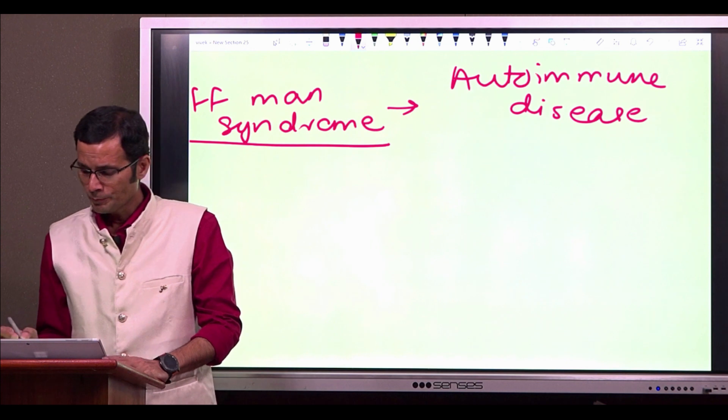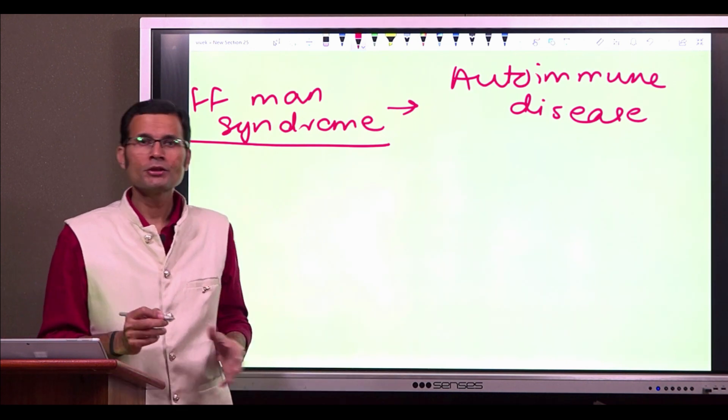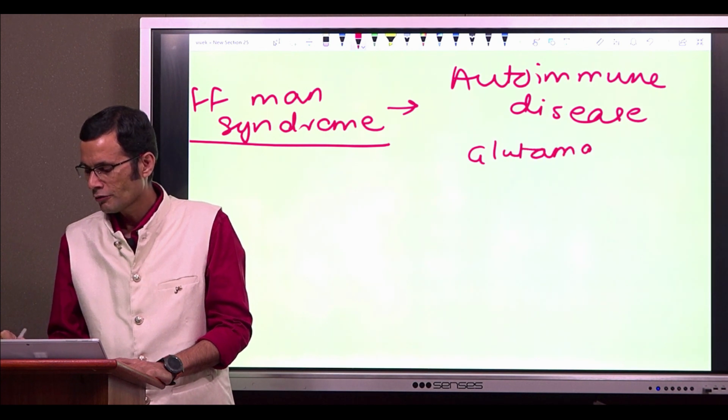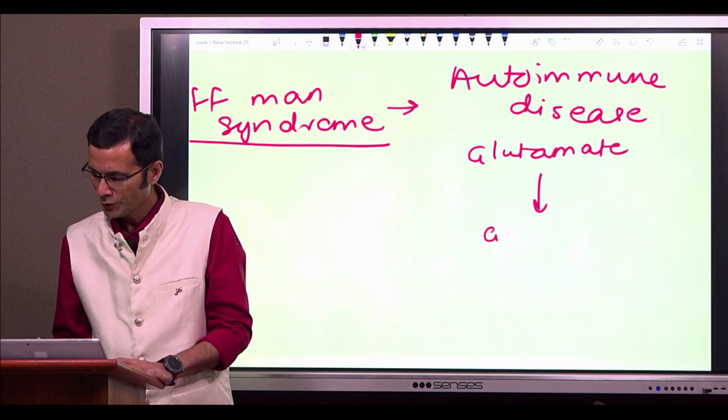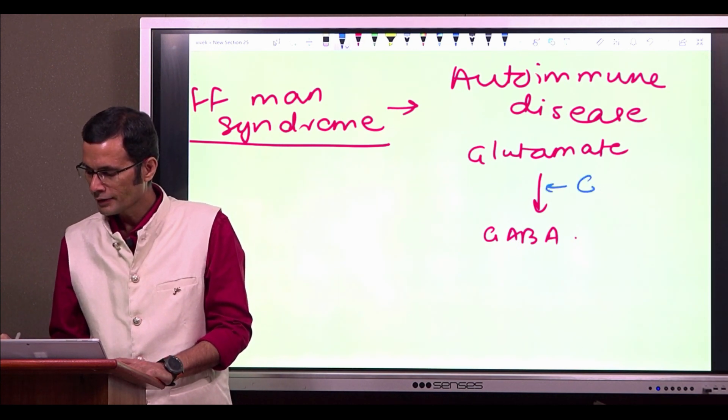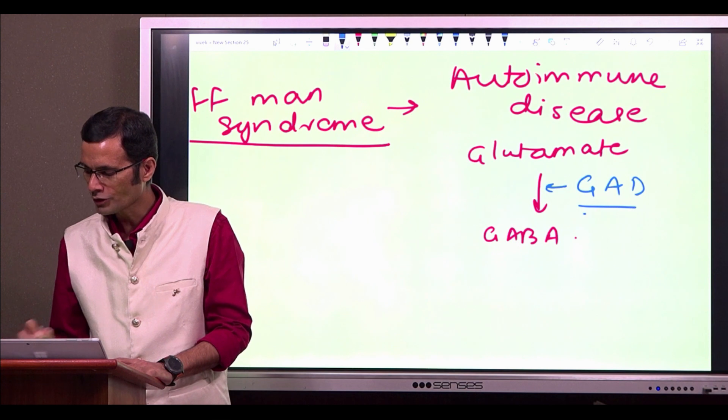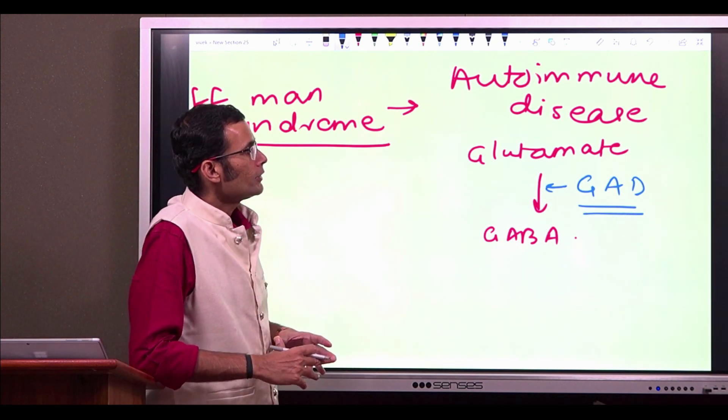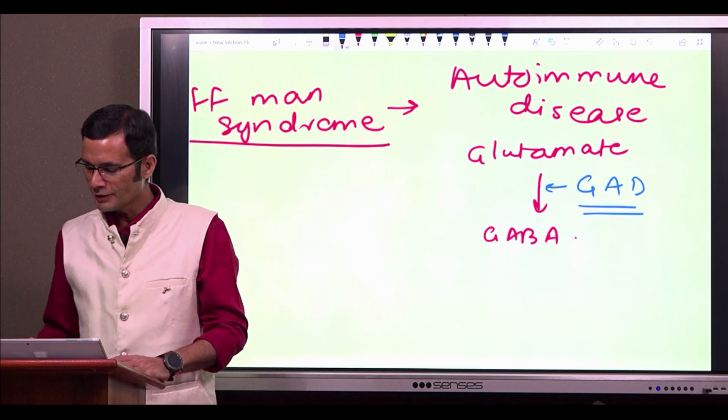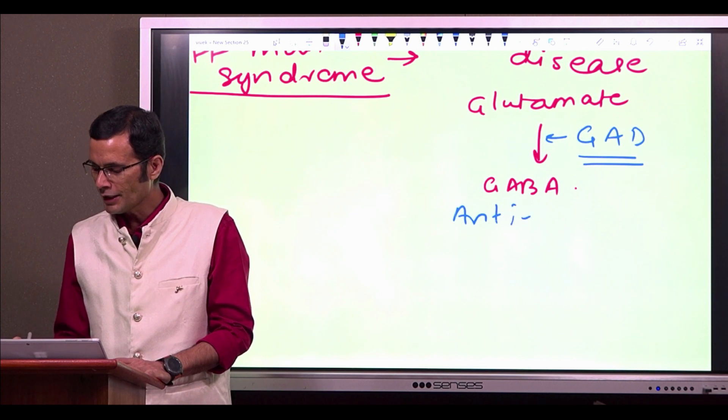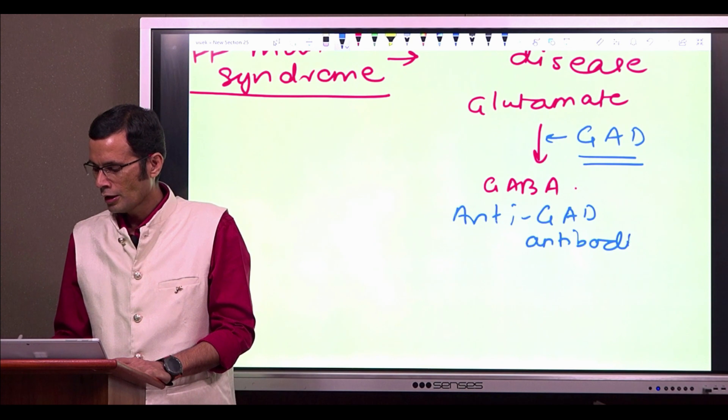So look, here is the disease. Glutamate would be converted to GABA by the action of an enzyme called glutamate decarboxylase. So in the autoimmune disease, what happens is anti-GAD antibodies will develop.